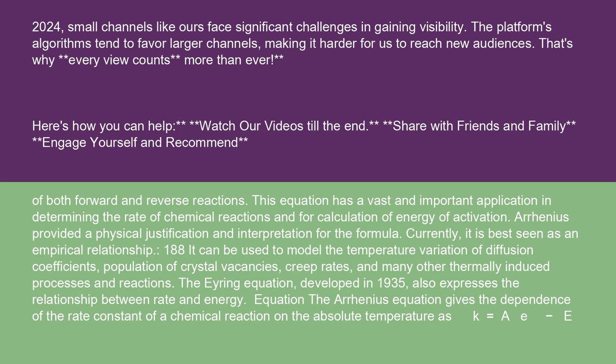Of both forward and reverse reactions, this equation has a vast and important application in determining the rate of chemical reactions and for calculation of energy of activation. Arrhenius provided a physical justification and interpretation for the formula. Currently, it is best seen as an empirical relationship. It can be used to model the temperature variation of diffusion coefficients, population of crystal vacancies, creep rates, and many other thermally induced processes and reactions. The Eyring equation, developed in 1935, also expresses the relationship between rate and energy.